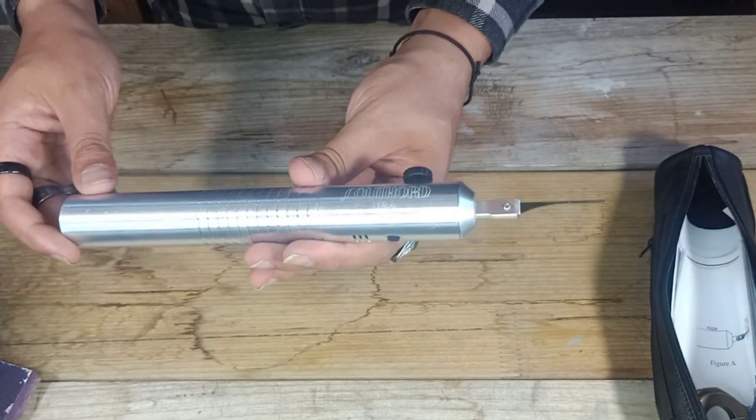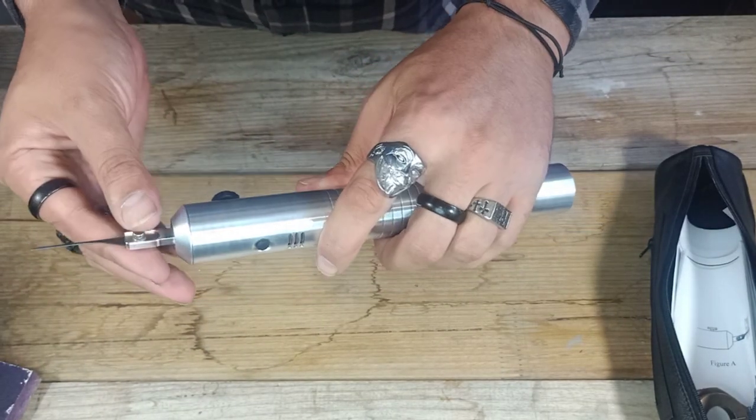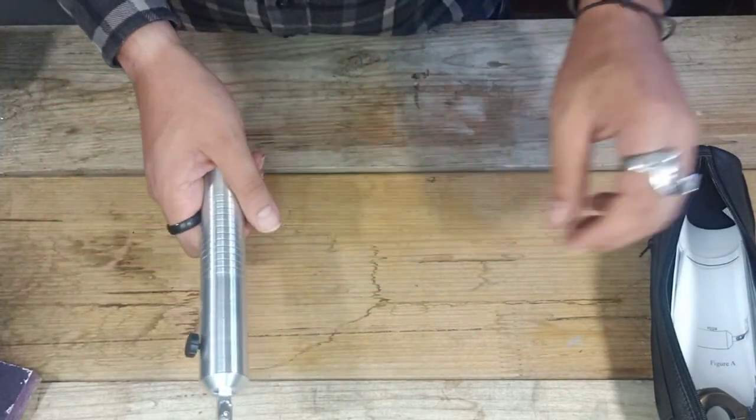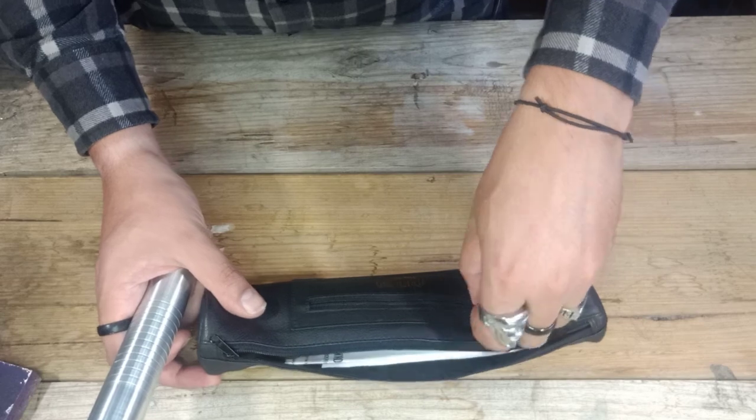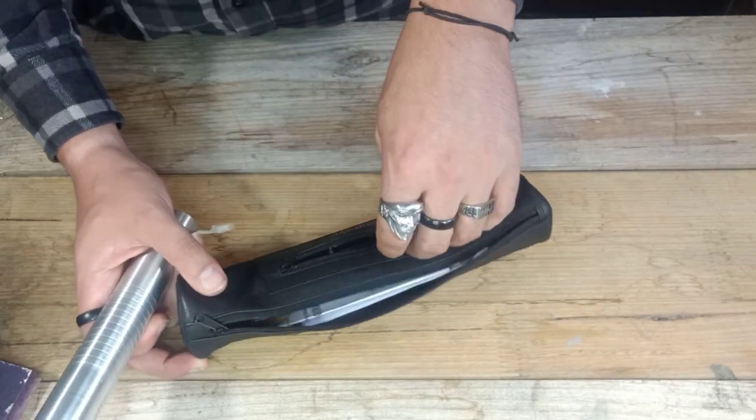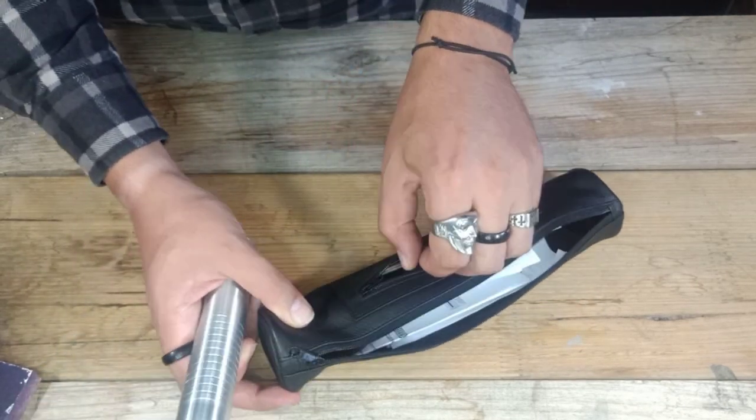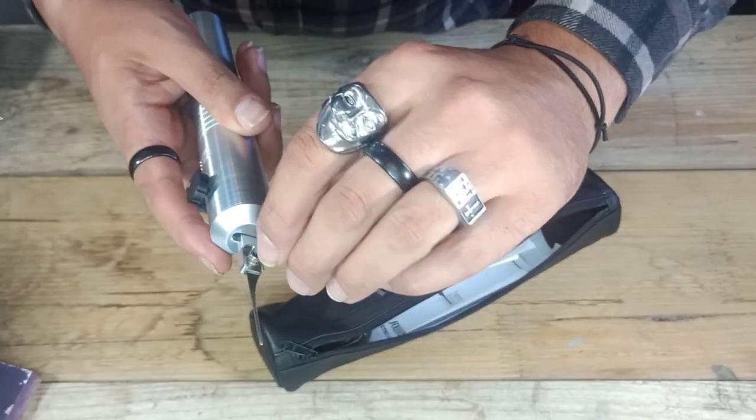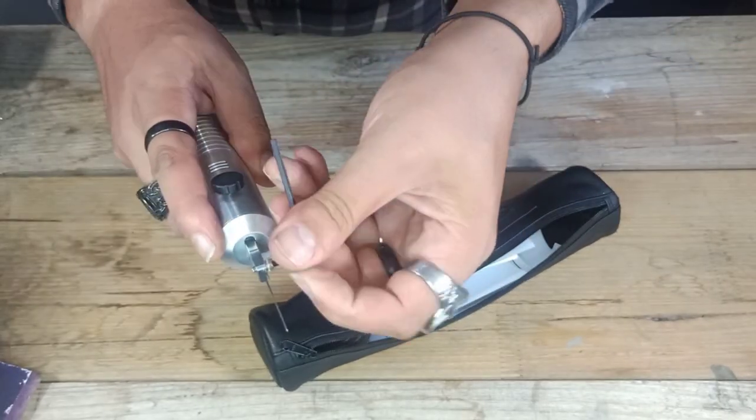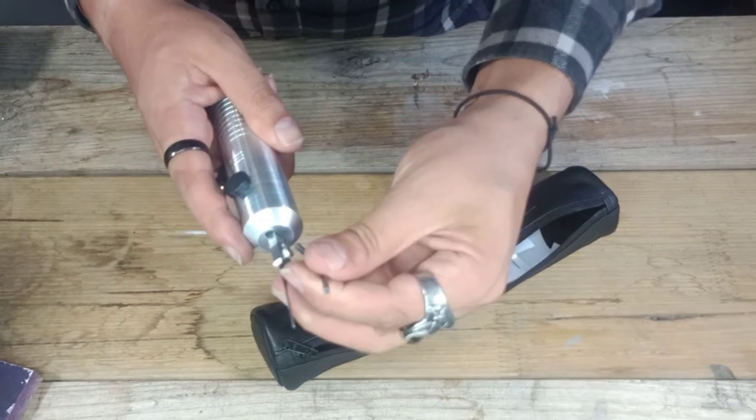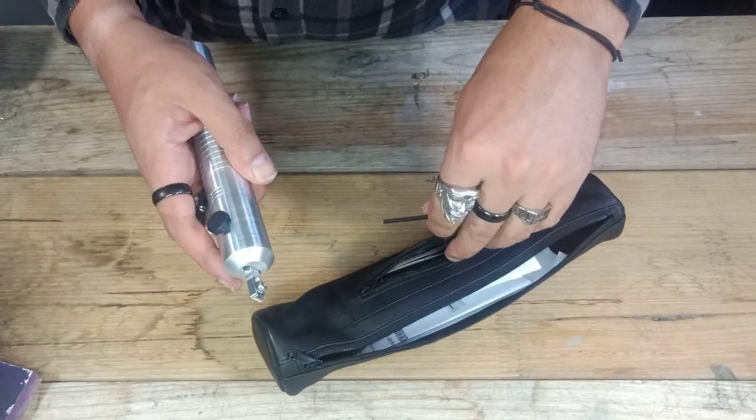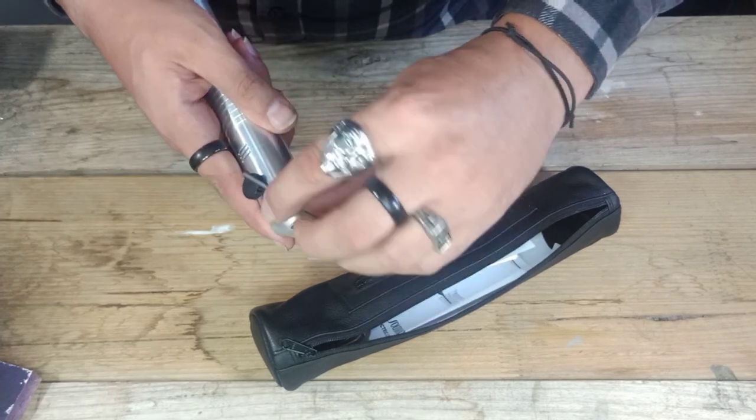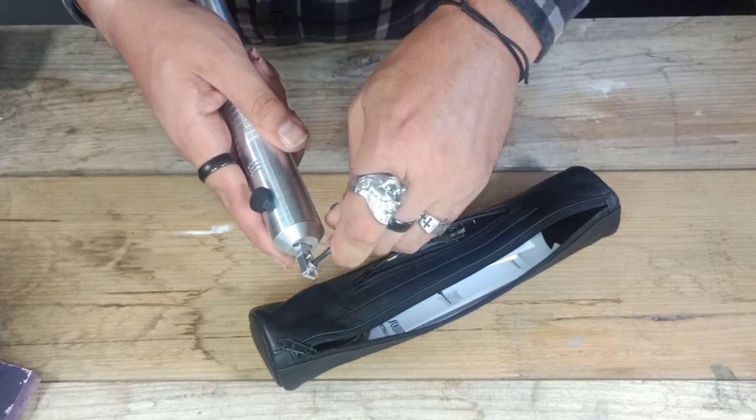So there we go, the Southord USA electric pick gun. I like it, it works very very well for what I use it for. It's going to be a part of my training kit as well, but for residential lockouts, this is going to be another little tool to add to my arsenal of tricks for gaining entrance. So I'm just going to take that needle back out, tie it all back up.